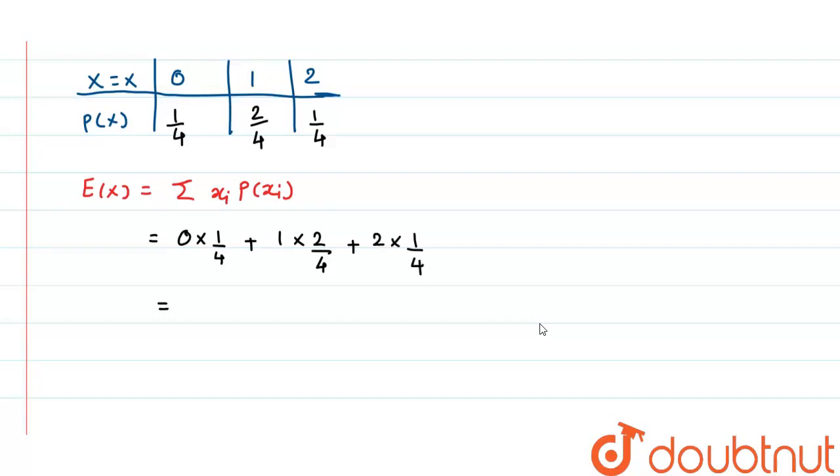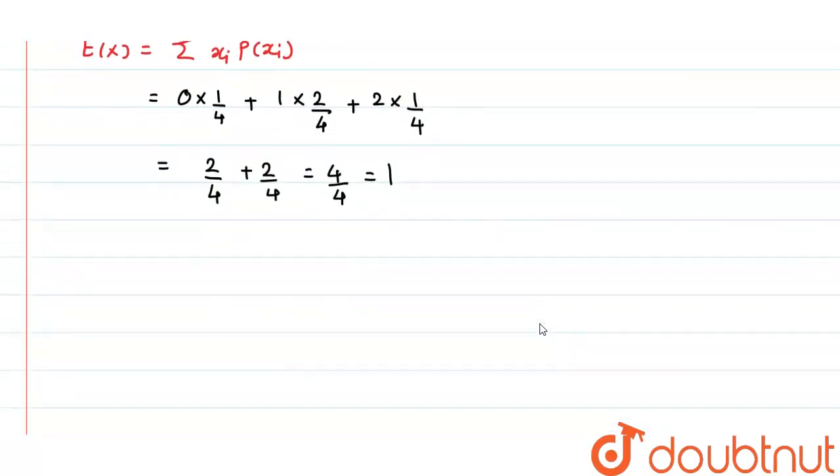So, which gives us answer 2 by 4 plus 2 by 4 that is equal to 4 by 4 which is equals to 1 that is E of X.